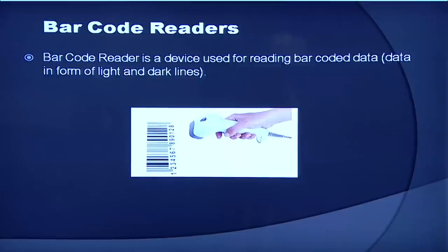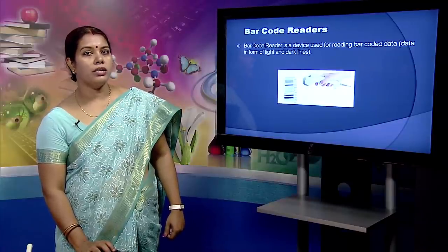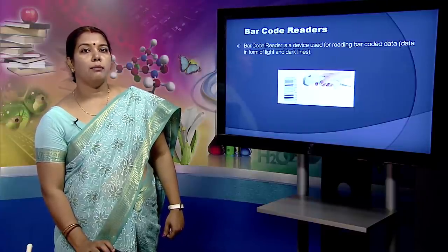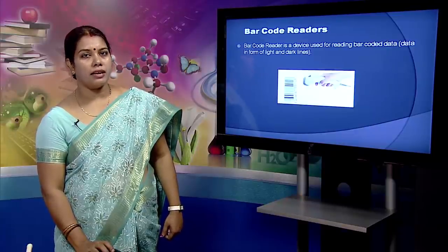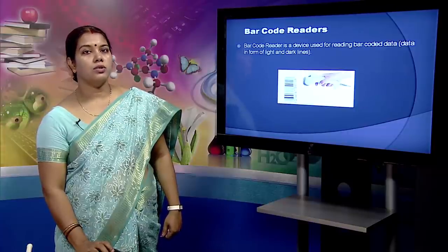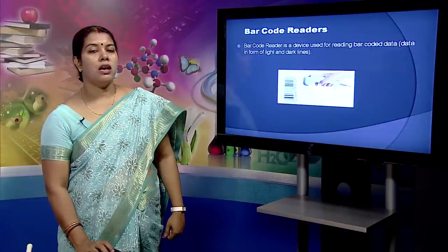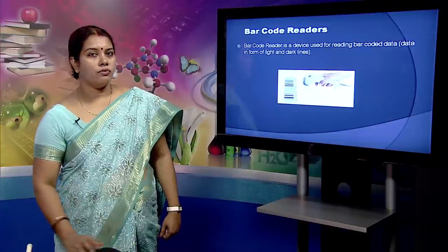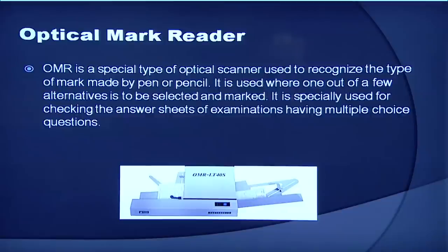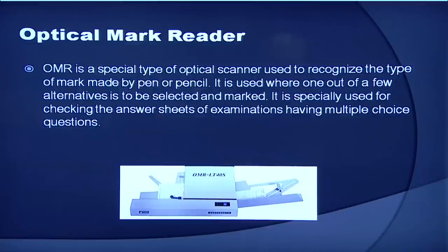The barcode reader scans a barcode image and converts it into alphanumeric values which are then fed into the computer. We also have an optical mark reader. OMR sheets are fed into optical mark readers. It is a special type of optical scanner used to recognize the type of mark made by pen or pencil. It is used where one out of a few alternatives is to be selected and marked, and is specially very helpful in checking answer sheets of examinations having multiple choice questions.